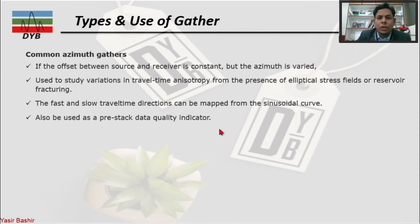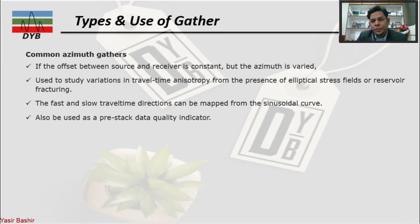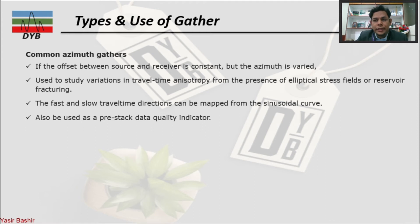There is another term: the common azimuth gather. In the azimuth gather, the offset between source and receiver is constant but the azimuth is varied. This is used to study the variation in travel time anisotropy from the presence of an elliptical stress field or reservoir fracturing. In the case of a fracture reservoir or anisotropic subsurface behavior, we use the azimuth gather.